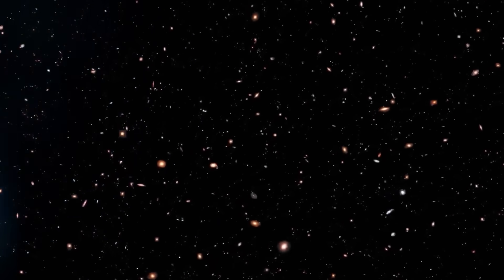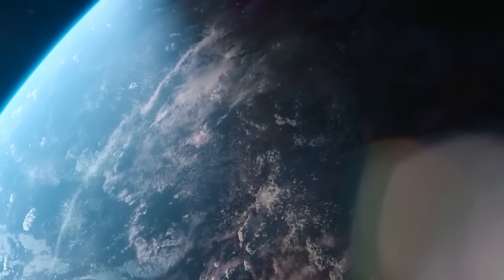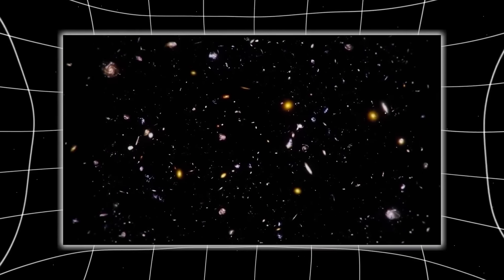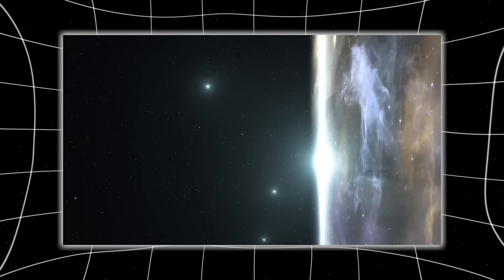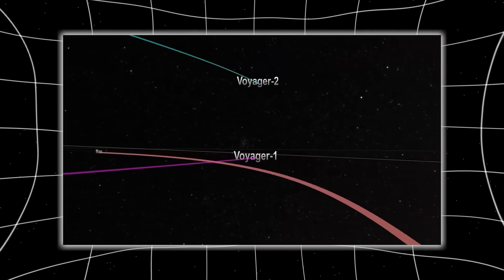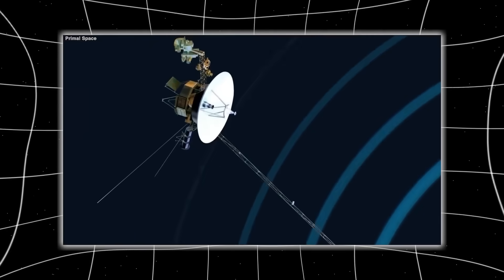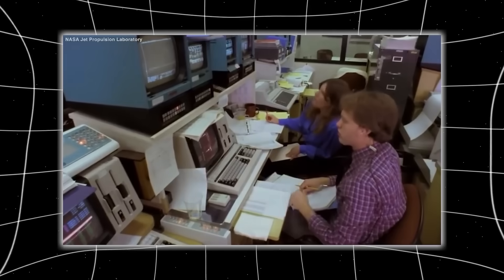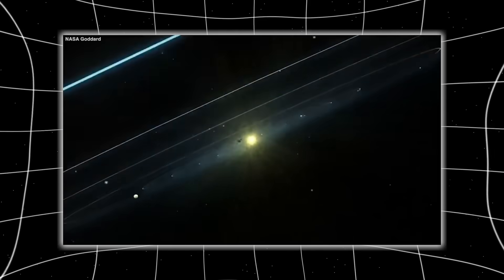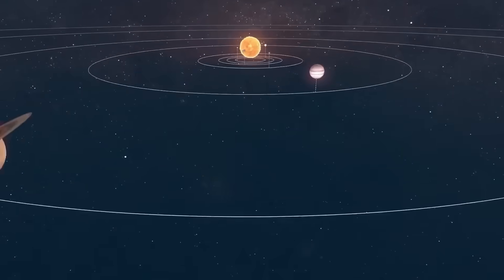For months, speculation focused on the idea that Voyager had received a transmission. But over time, the theory collapsed. The tone, the orientation, the data, all of it aligned not with an incoming broadcast, but with Voyager's presence in that specific part of space. It didn't feel like Voyager had picked something up. It felt like Voyager had triggered something. The theory that took hold was radical, but hauntingly consistent. Voyager hadn't received a message. It had been noticed.